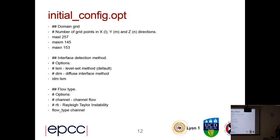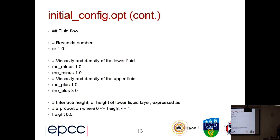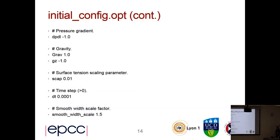The initial configuration for generating the initial state involves setting up the domain size and specifying what interface detection method you want to use. We have code for the diffuse interface method, but it's not fully tested. Currently we have just the Rayleigh-Taylor instability or channel flow, then the usual parameters: Reynolds number, densities and viscosities. The initial height of the interface is halfway up — the vertical dimension is scaled from zero to one. Pressure gradient and gravity act downwards. The channel has to be horizontal at the moment, though we'd like to eventually allow an incline.